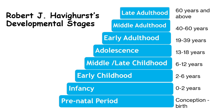Stage 8: Late Adulthood involves adjusting to physical changes, retirement, and reflecting on one's life achievements. Consider a retired individual who looks back on their career, adjusts to physical changes, and finds new ways to stay engaged, such as volunteering or pursuing hobbies.